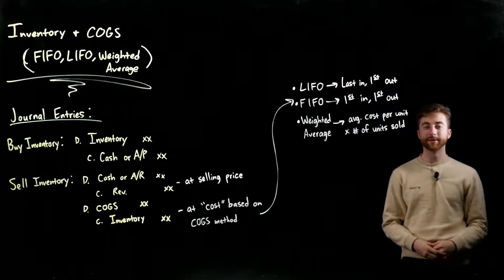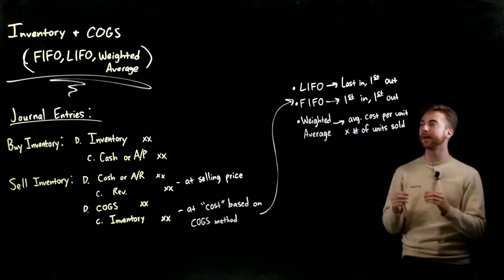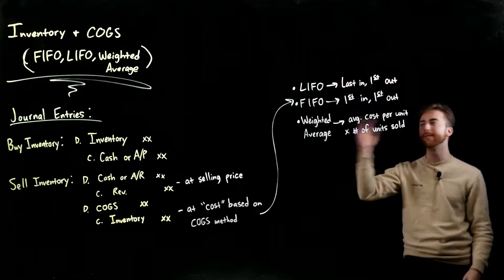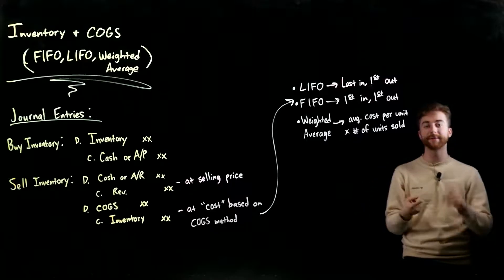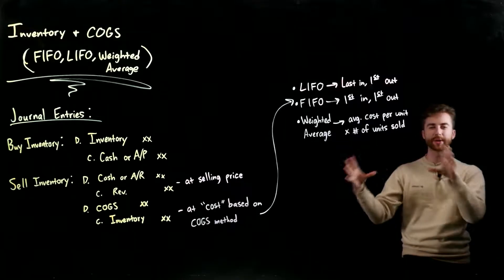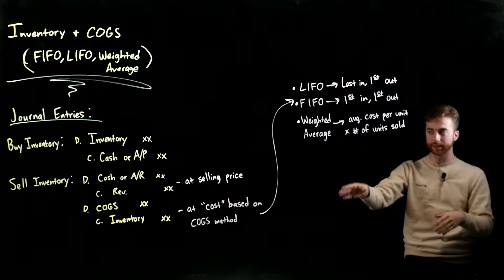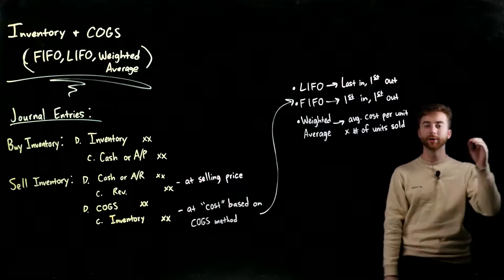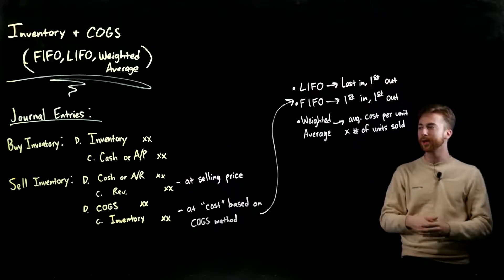Welcome back, my name is Zach Vines. Today we're going to look at how to find the cost of goods sold balance when dealing with inventory under three different methods: FIFO, LIFO, and weighted average. First I'll show you the big picture of what's actually going on, the journal entries that build the foundation, then walk through examples for each method.